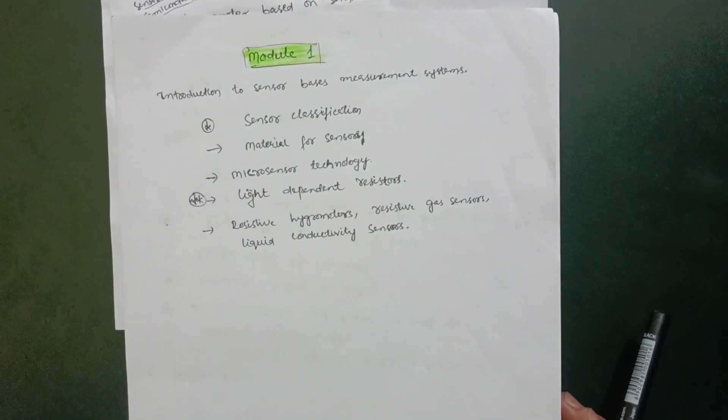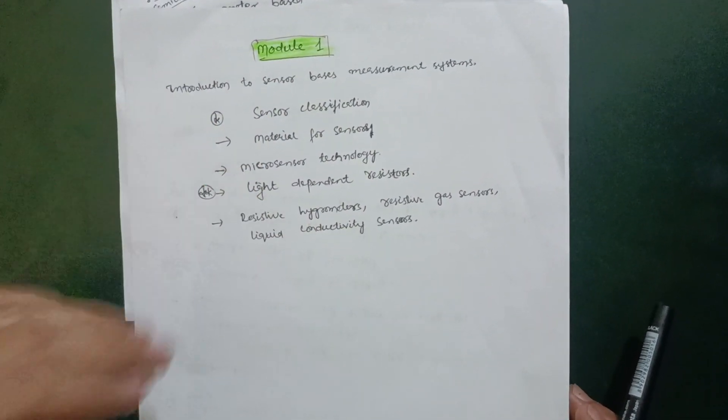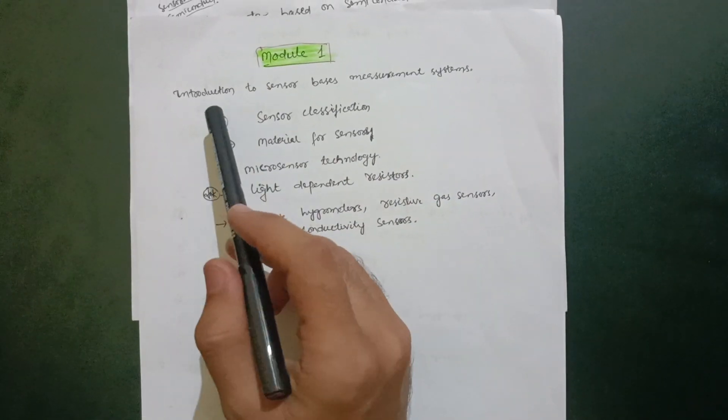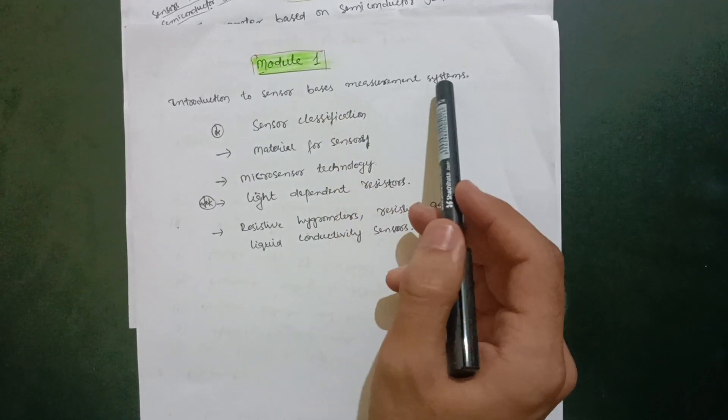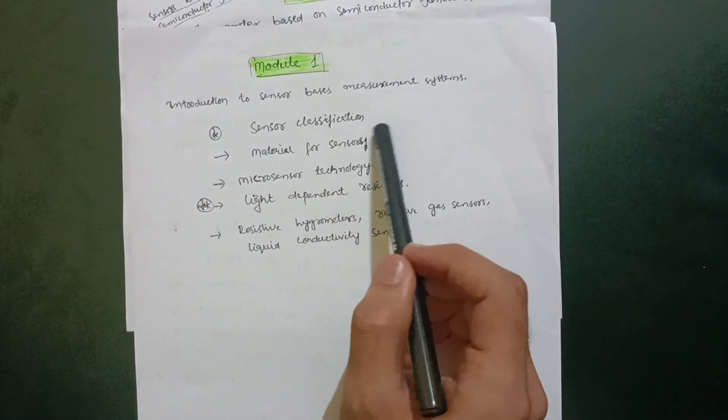Then Module 1 comes up at the last. It contains vast syllabus. Just go through this syllabus - no need to take a dive more than that particular content. Introduction to Sensor-Based Measurement Systems is the chapter name, in which you have to cover sensor classification, which is the most important part in this particular module.